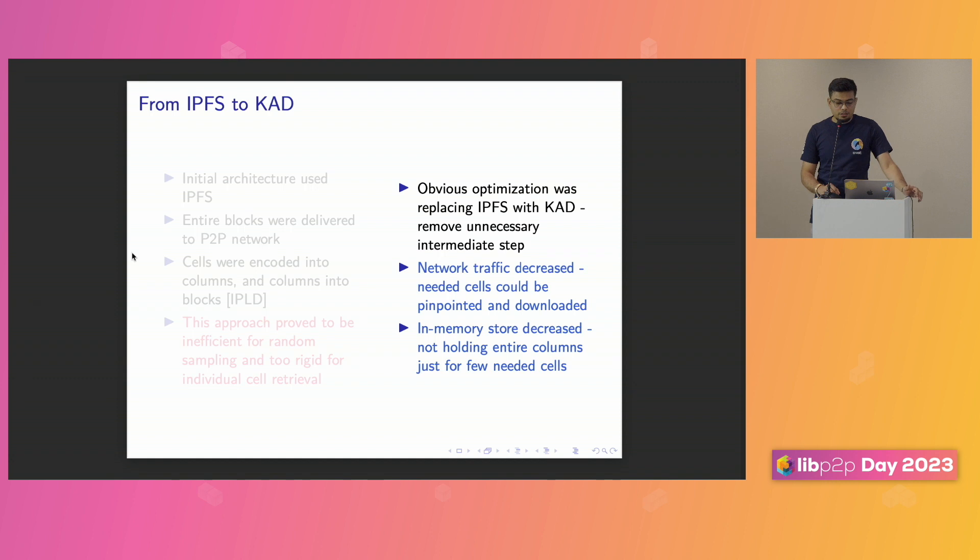And from that, we wanted to go one level down. We wanted to use the Kademlia DHT directly. And the network traffic decreased. The needed cells can be pinpointed by a particular index and then be downloaded. The in-memory store decreased. We didn't have to keep the entirety of the columns. We just needed a few cells.